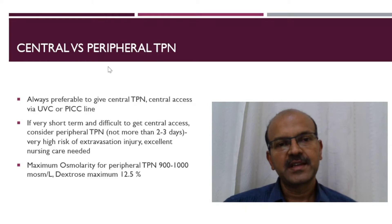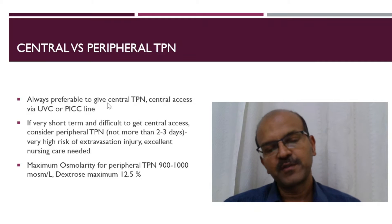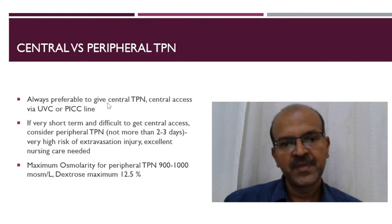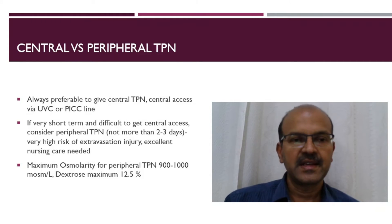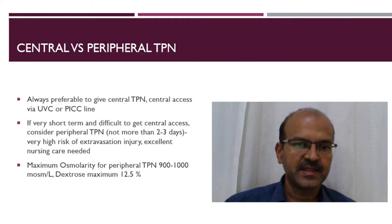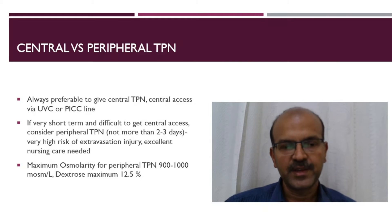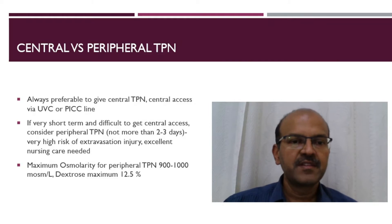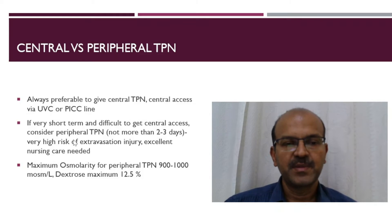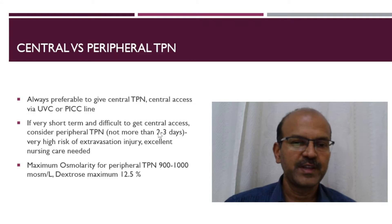When should we use central and peripheral TPN? It is always preferable to give central TPN, and central access can be via the umbilical venous catheter or the percutaneous central line. If very short term and difficult to get central access, we may consider peripheral TPN, but usually not more than 2 to 3 days.